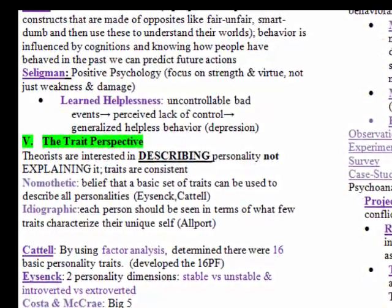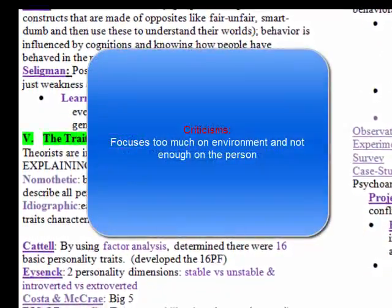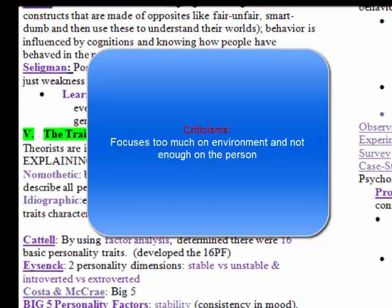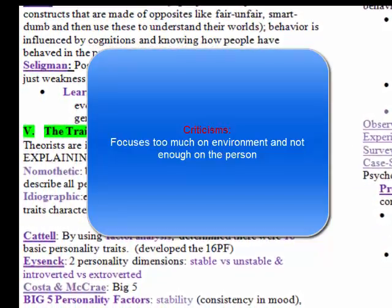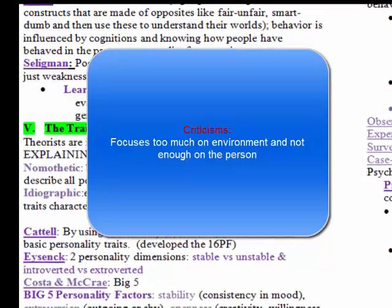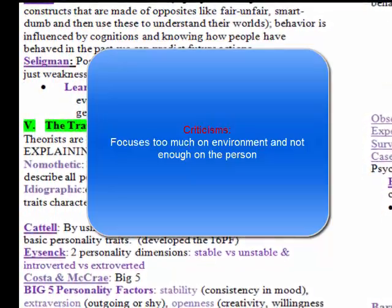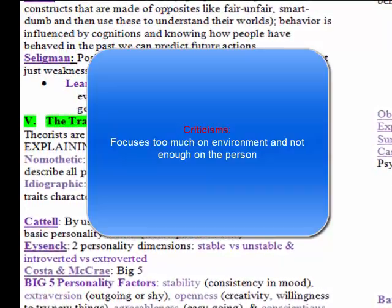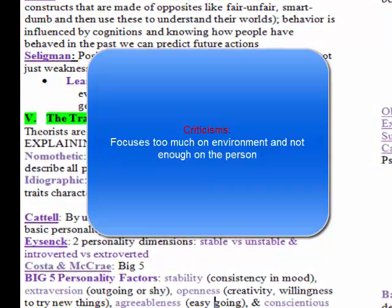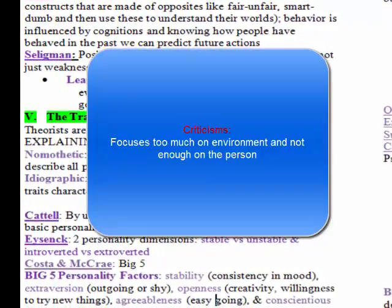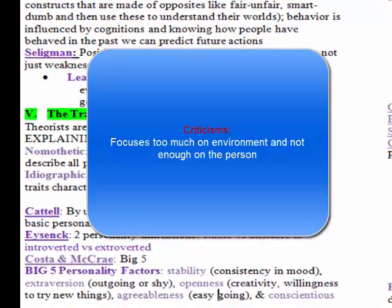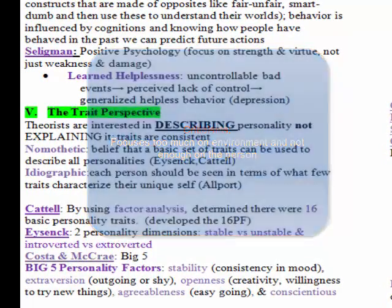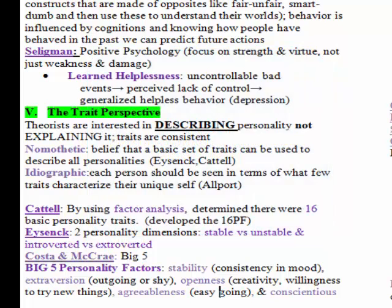Criticisms of the social cognitive theory include that there's too much focus on the situation. A positive of this theory is that it draws attention to the environment, which none of the other theories really do. However, in focusing so much on the situation, critics say theorists are not recognizing inner traits — they question where the person is in this theory.